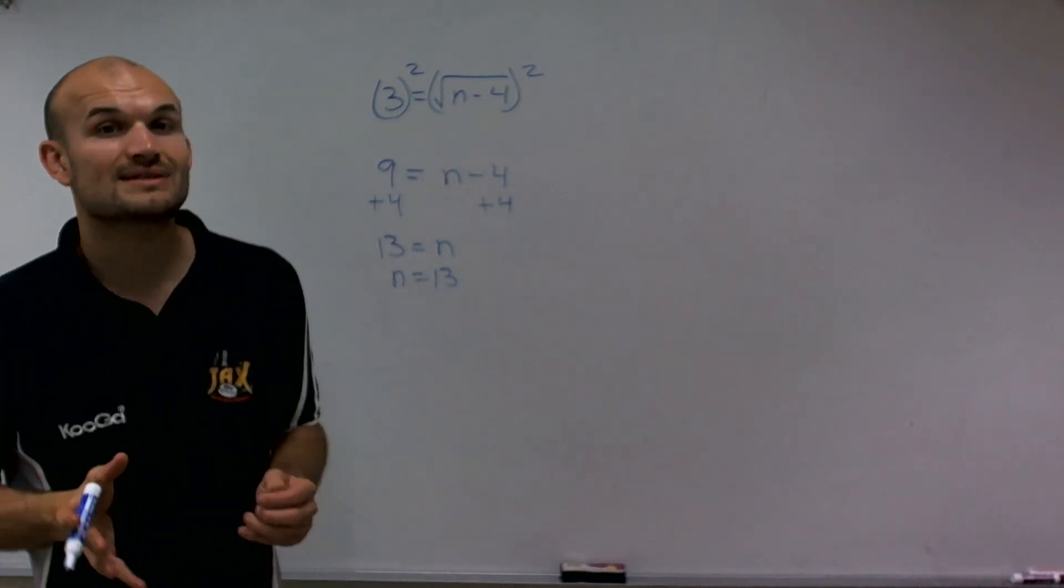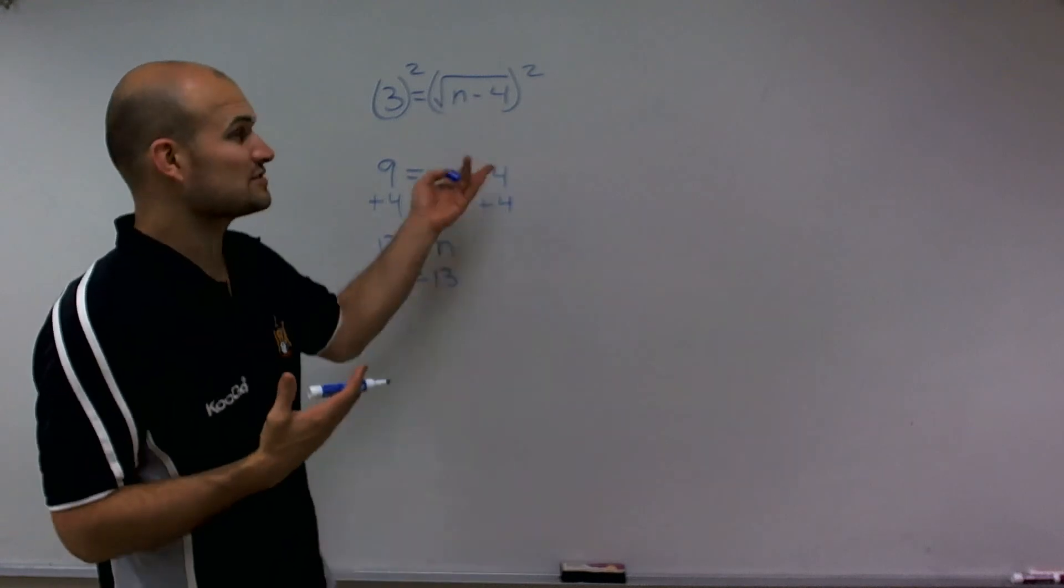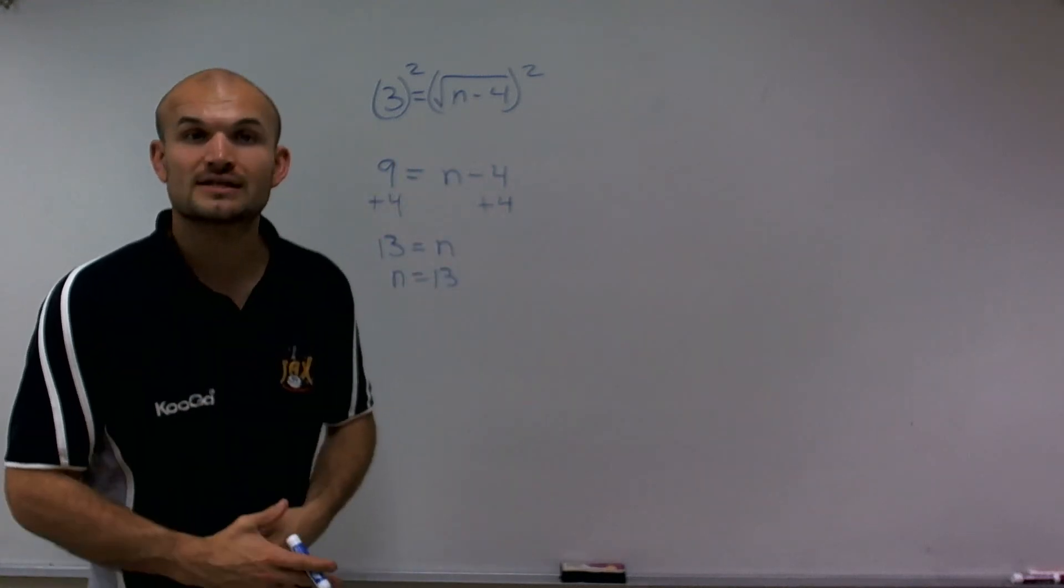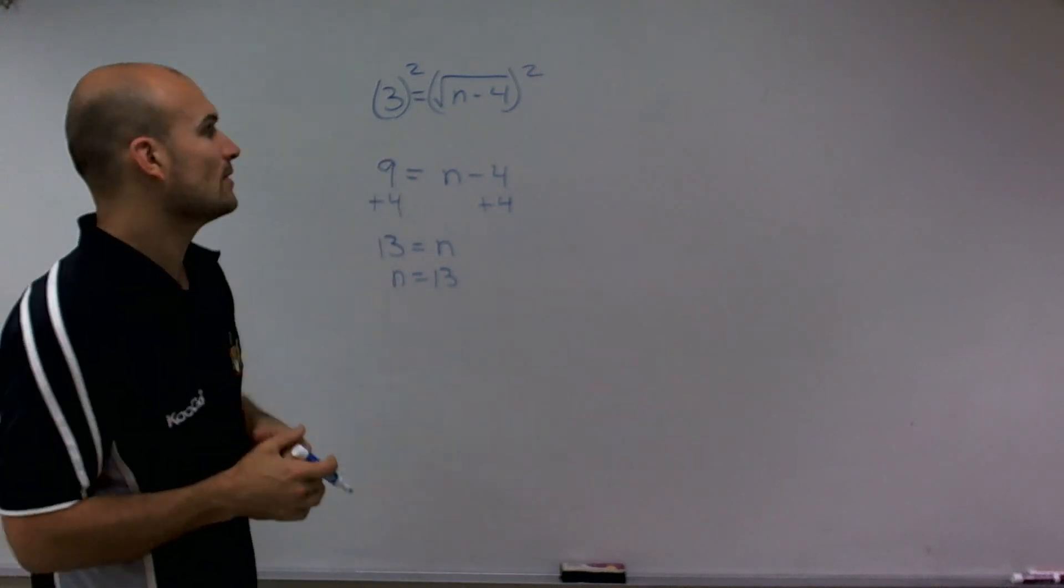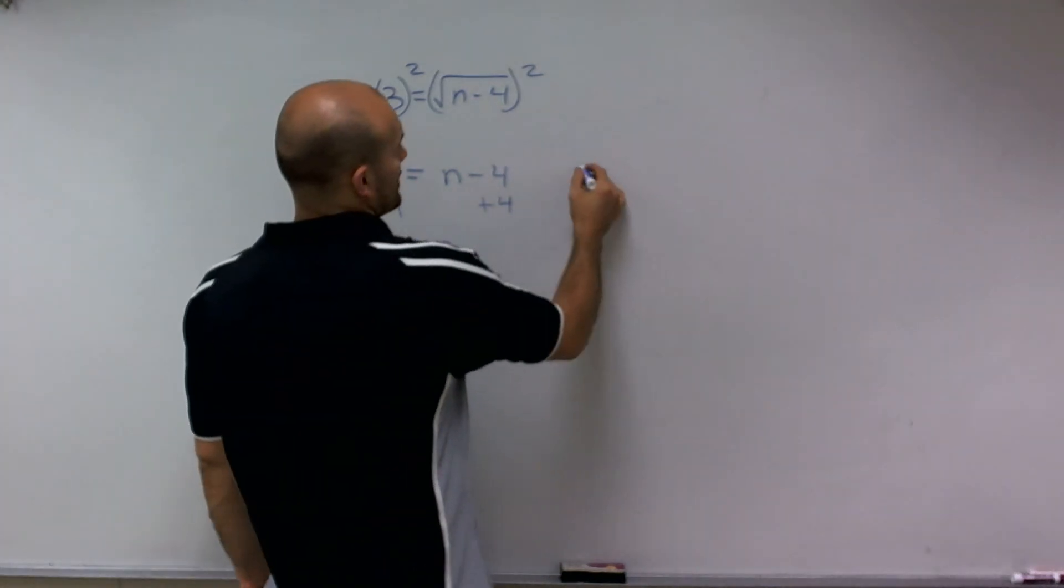Now, it's very important when dealing with radicals and squaring, whenever we square both sides, we've got to make sure we check for extraneous solutions. So I'm going to want to check the solution, make sure that it satisfies my equation. So what I'm going to do is plug it back in.